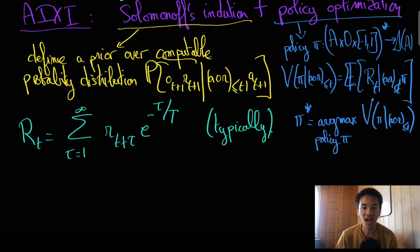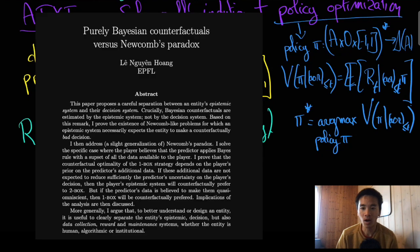And there you have it. I've just described AIXI, which is often regarded as the optimal decision-making system. Now, there are caveats to be said about AIXI, like its uncomputability or the fact that it does not quite address Newcomb's paradox. But I'll simply refer to other contents I've produced on this topic.